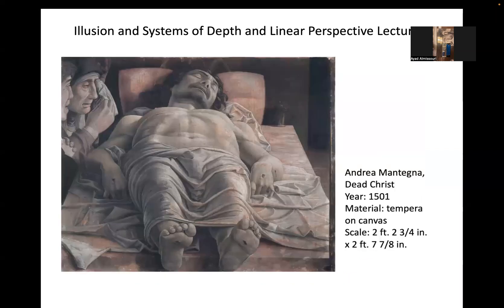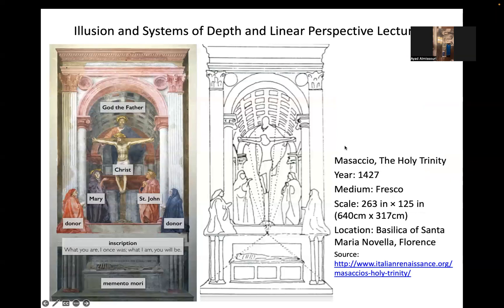Andrea Mantegna's Dead Christ, done in 1501, is a tempera painting on canvas roughly two by two feet that showcases the exaggeration of the foreshortened angle of Christ's feet after the crucifixion, along with an elongation of the head. Masaccio's Holy Trinity, done in 1427, is a fresco in the Basilica of Santa Maria Novella in Florence — a Dominican church — repeating common motifs: God the Father, Christ crucified, Mary, Saint John, and the painting's donors.